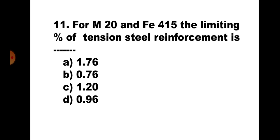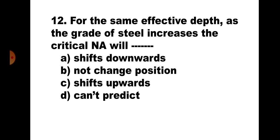Question number eleven: For M20 and Fe 415, the limiting percentage of tension reinforcement is — (a) 1.76, (b) 0.76, (c) 1.20, (d) 0.96. The limiting percentage pt,lim for Fe 415 is 0.048 × fck. With fck = 20: 0.048 × 20 = 0.96. The correct answer is (d) 0.96.